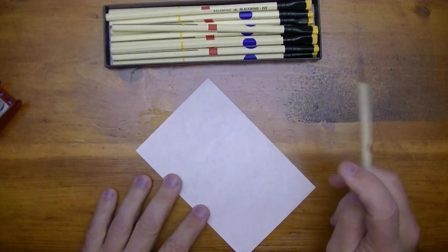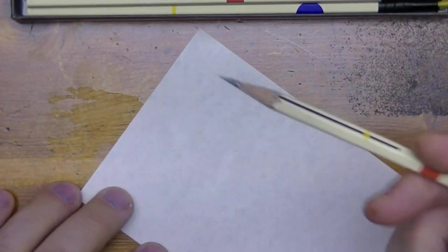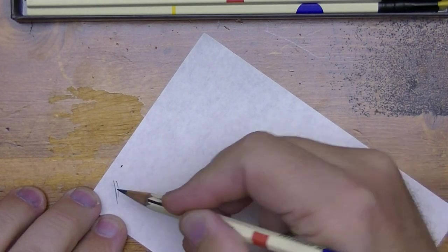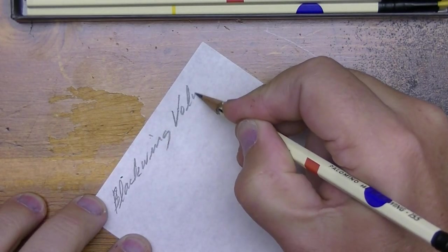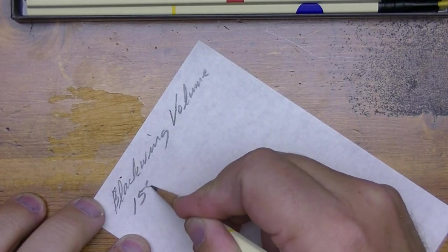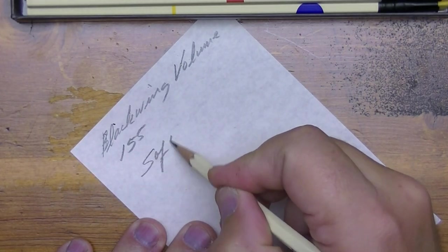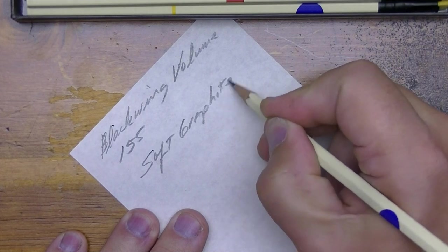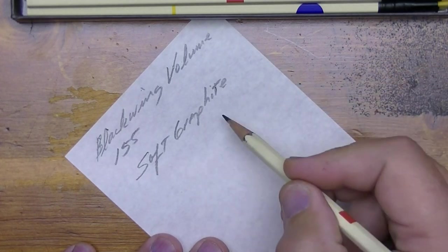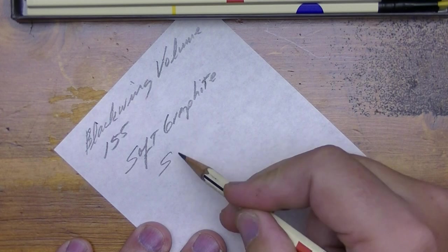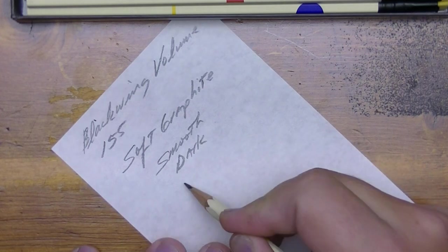So real quick test here of this pencil. I'm sure it will pass with flying colors as usual. Okay, so this is the—oh I broke it—this is the Blackwing Volume 155. Now as we have seen already earlier, this is a soft graphite, just like the Blackwing Black. Okay, very soft. What does that mean, very soft? Well that means you're going to get a very smooth and dark print or drawing.